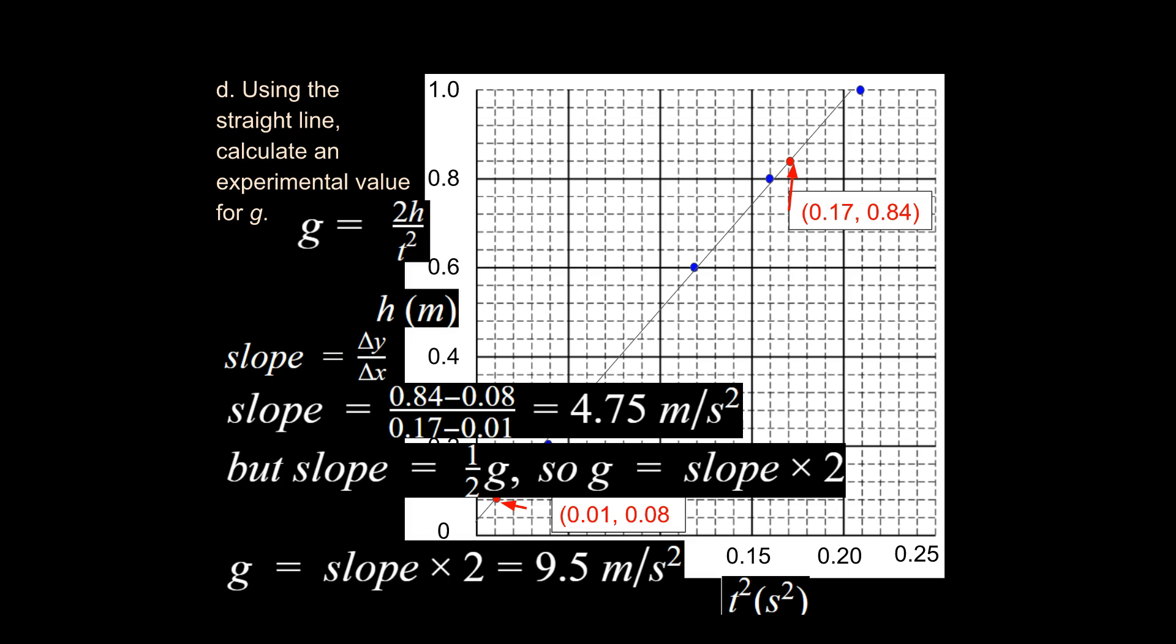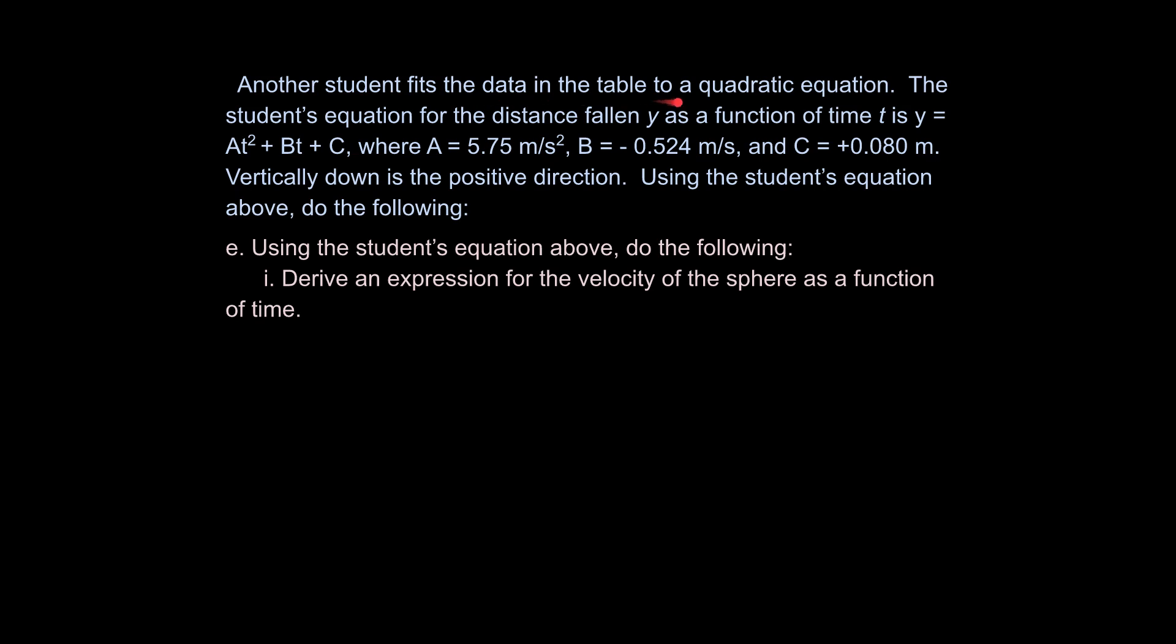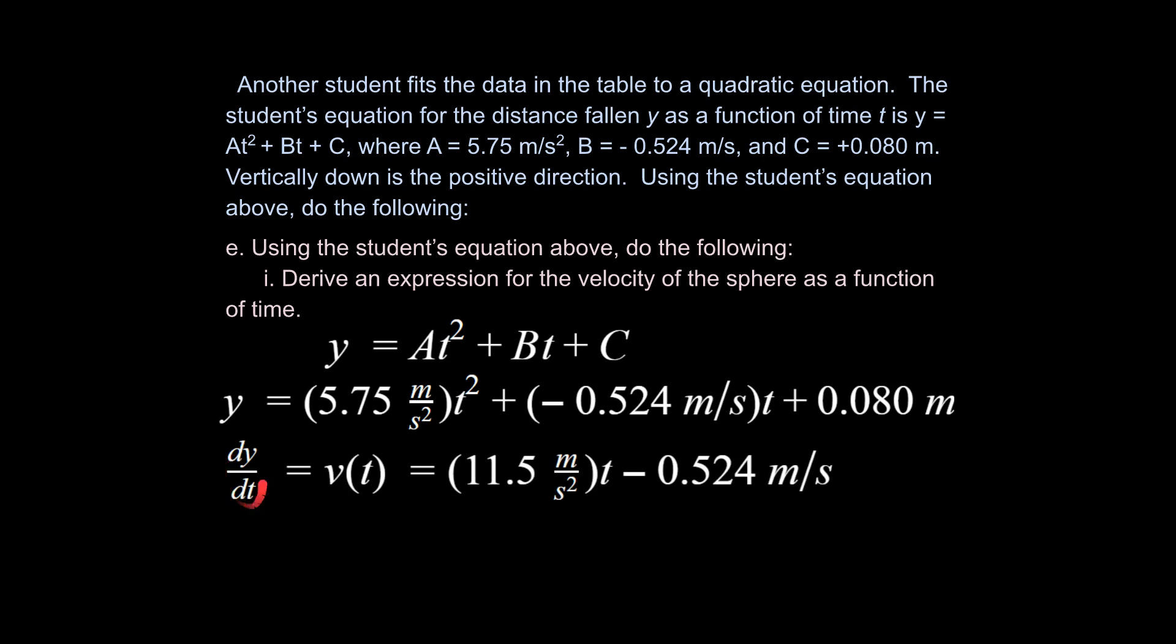This next part says another student fits the data in the table into a quadratic equation. Student's equation for the distance fallen y as a function of time is y equals At squared plus Bt plus C, where A equals 5.75 m/s², B equals 0.524 m/s, and C equals 0.080 m. Vertically down is the positive direction. Using the student's equation above, do the following. Derive an expression for the velocity of the sphere as a function of time. Alright, so they gave us a function that shows position with respect to time and we need the velocity with respect to time. So hopefully this is going to be pretty straightforward for you. All you're going to do is take the derivative of that equation. We can do this generally speaking or we can go ahead and plug in specific values for a, b, and c. I went ahead and did these specific values for a, b, and c and took the derivative of that. So dy/dt is your velocity with respect to time. And so we end up with this equation here for velocity with respect to time.